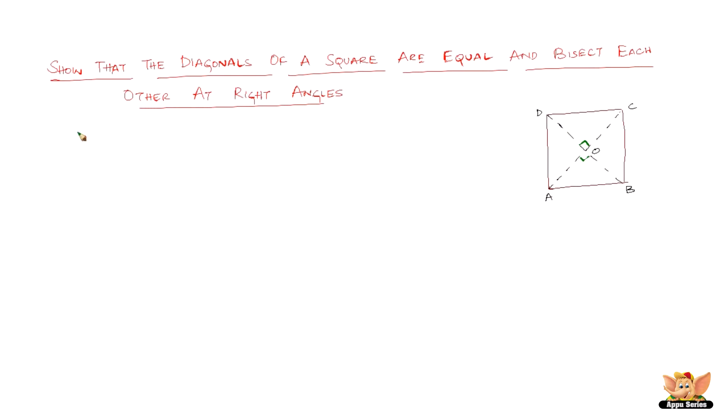So let's see how do we go about doing that. Let ABCD be a square such that its diagonals AC and BD intersect at O. We have to prove that AC equals BD and AC and BD bisect each other at right angles.